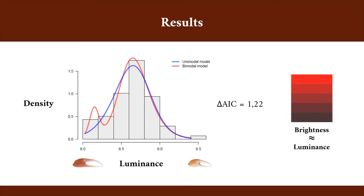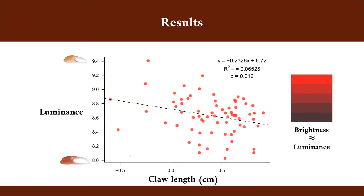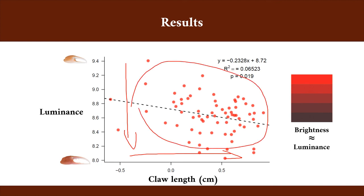What we found was that luminance is unimodally distributed, since the unimodal model — the blue curve — is a better fit to our data. Also, there is an almost-symmetric distribution of bright and dark claws. We also found that long claws tend to be darker, but there's a lot of variation in the data.